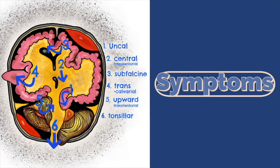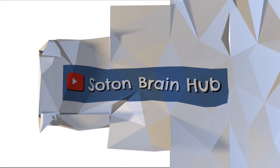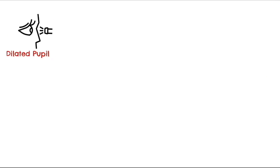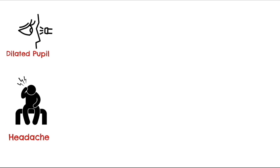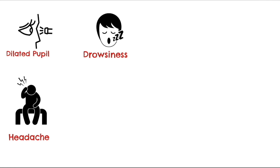Now, to finish off, we're going to go through a few of the symptoms of brain herniation. One of the symptoms you can get is a dilated pupil due to compression of the parasympathetic supply provided by the ocular motor nerve. Patients often complain of headache due to the increase in intracranial pressure, and as time goes on, patients often become drowsy.